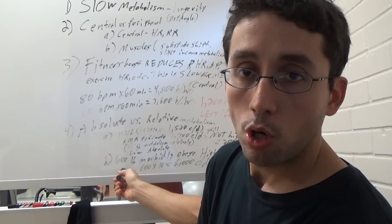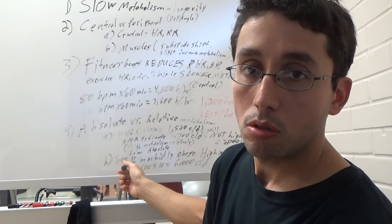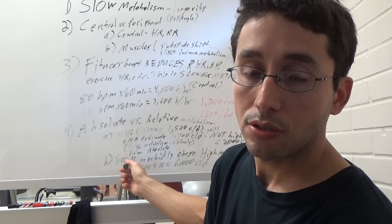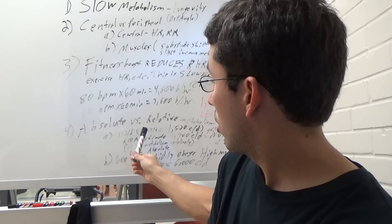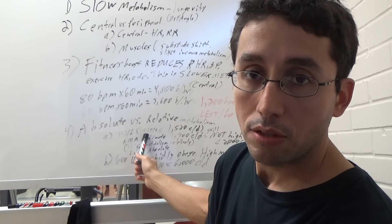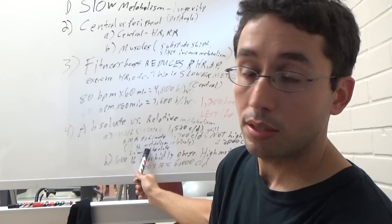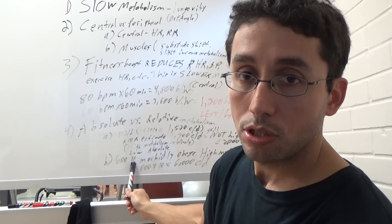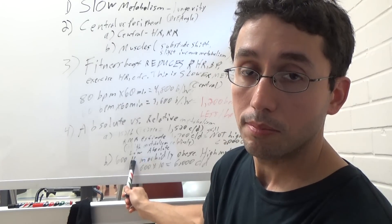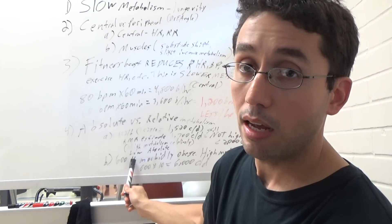Now, you take someone who's 600 pounds, morbidly obese individual. That is 6,000 calories a day. So I'm burning 1,520 calories a day and they're burning 6,000 calories a day. You see the difference between absolute and relative? Absolute metabolism, they have a high metabolism. This person has a very high metabolism, and that's not healthy.